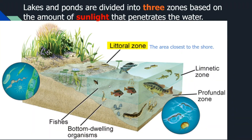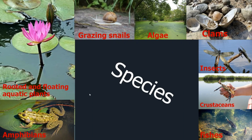Lakes and ponds can be divided into three sections based mostly on the amount of sunlight that enters the water. The littoral zone is the section by the shore. The limnetic zone is at the top and receives a lot of sunlight, but is not connected to the shore. The profundal zone is the deepest area, unable to receive much sunlight or none at all. In the littoral zone you may find amphibians, rooted and floating plants, grazing snails, algae, clams, insects, crustaceans, fish, and more.